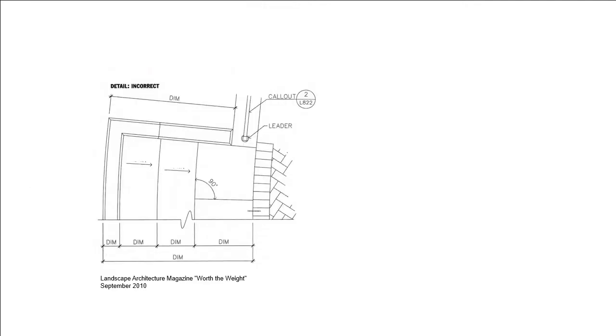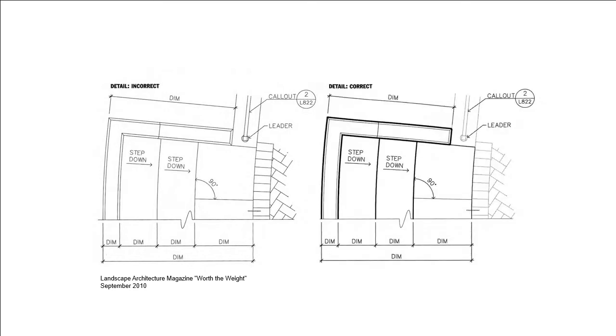This is important because a drawing that has all the same line weights is difficult to understand in comparison to a drawing that has a variety of line weights. You can see in this example it's much easier to understand and read the drawing on the right than it is the drawing on the left.